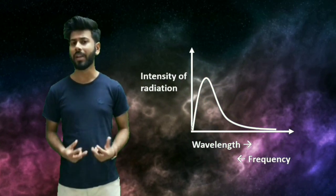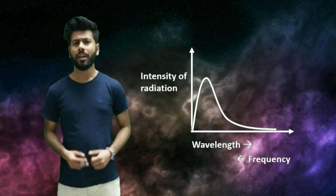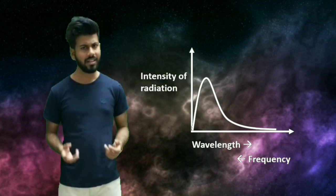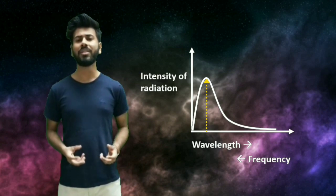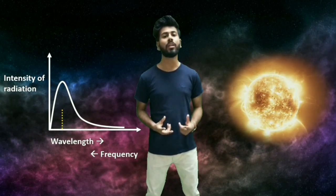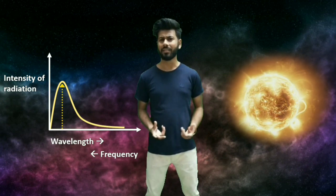Now we have reached the blackbody radiation curve. We can see that there is a particular frequency or wavelength which dominates over the emitted energy range. Let's take the example of the Sun. The Sun emits energy of all wavelengths because it is almost a black body. But why does it appear yellow? Because the maximum emitted wavelength by the Sun corresponds to the yellow color wavelength.